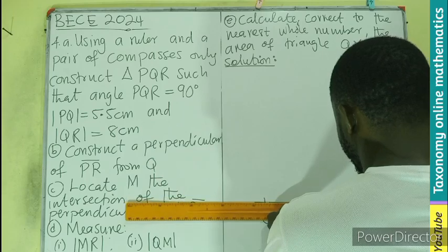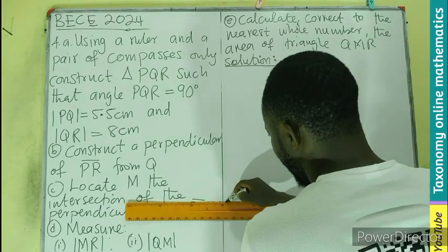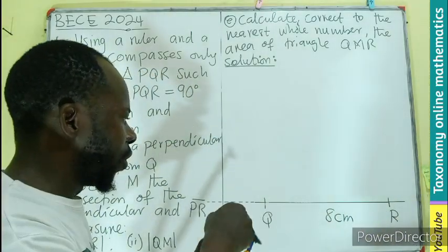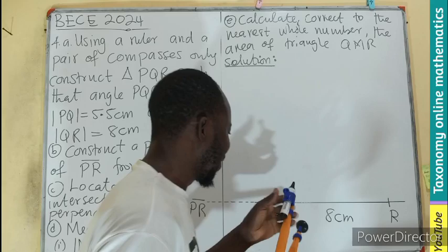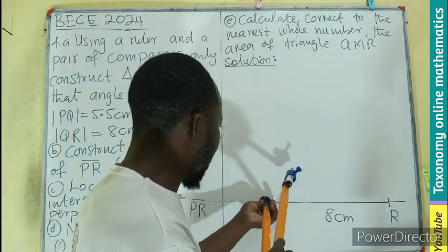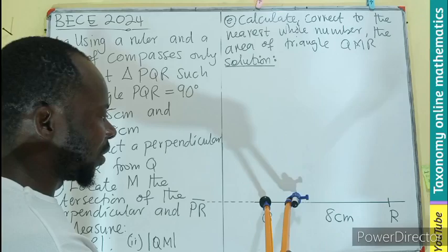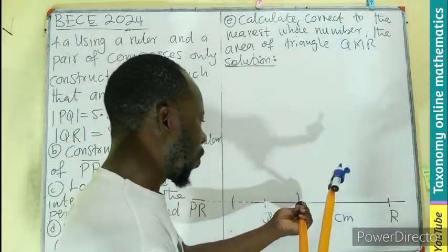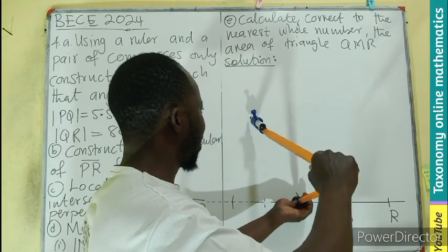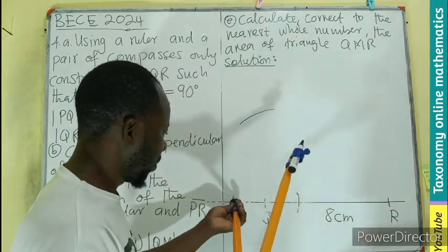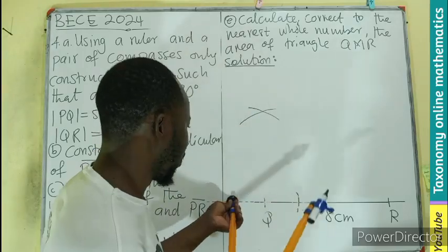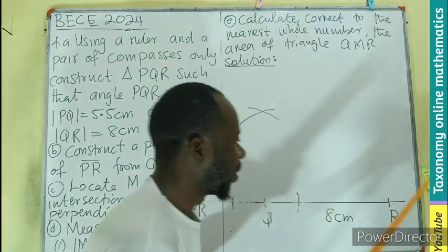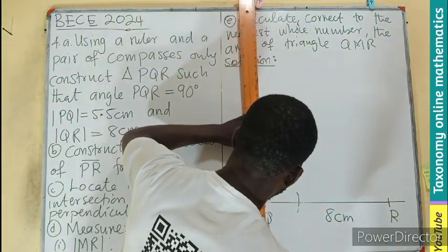I'll be extending this line a bit. We put the compass point at Q, then open any reasonable radius and make an arc, then on those two arcs we make another arc above. That gives rise to the 90 degrees we are looking for, so let's join that intersection arc with Q.